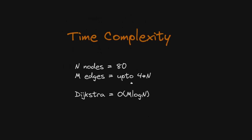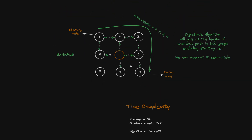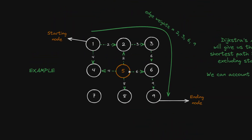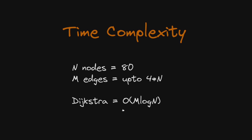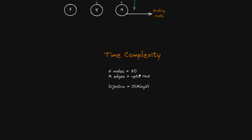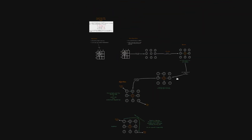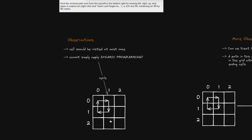For time complexity: we have N = 80 nodes and up to 4N edges in the graph, since each node has at most four neighbors (boundary nodes have fewer). Dijkstra's algorithm runs in O(M log N), so the total time complexity is O(M log N). Substituting the values confirms it is essentially very fast.